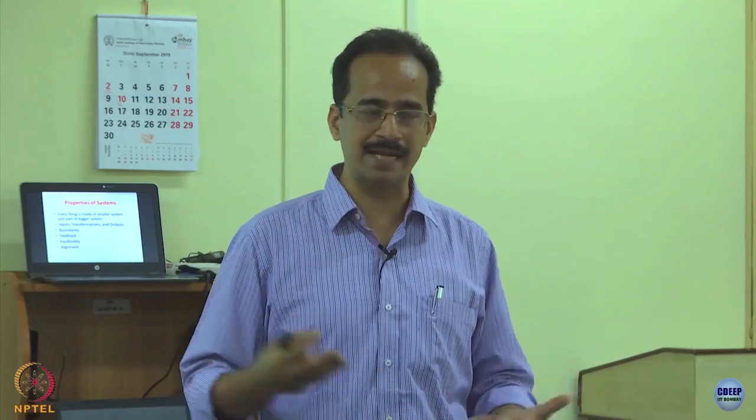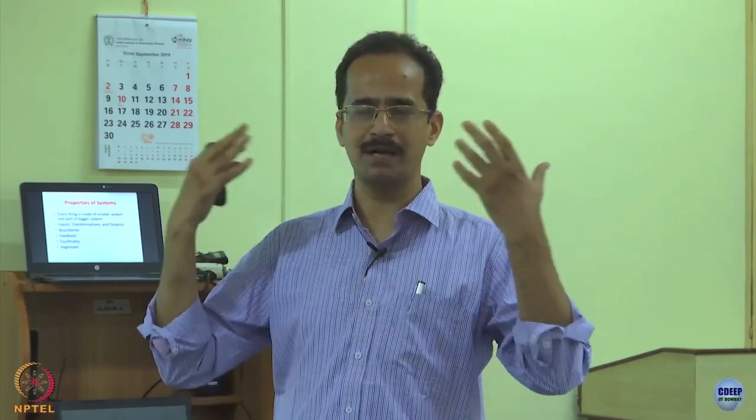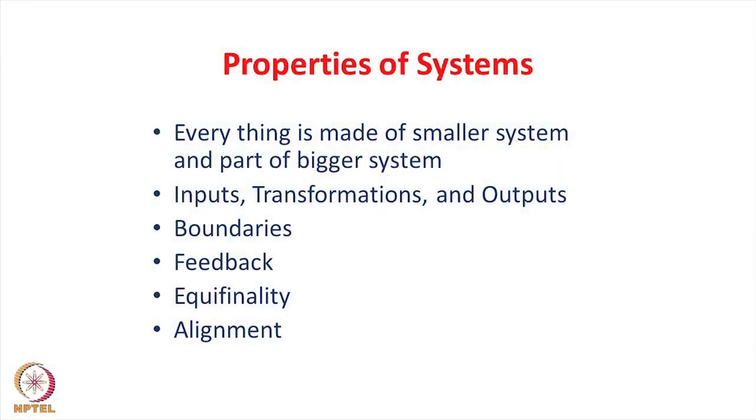At the higher level, atoms are part of a molecule, molecules are part of organisms, organisms are part of society, society is part of an ecosystem. Earth is only one sub-ecosystem which is part of a much larger system. So everything is made up of smaller systems and is part of a bigger system. There is always input, transformation, and output.